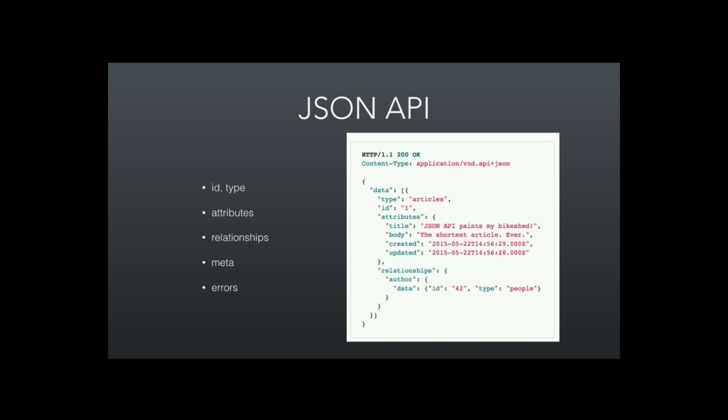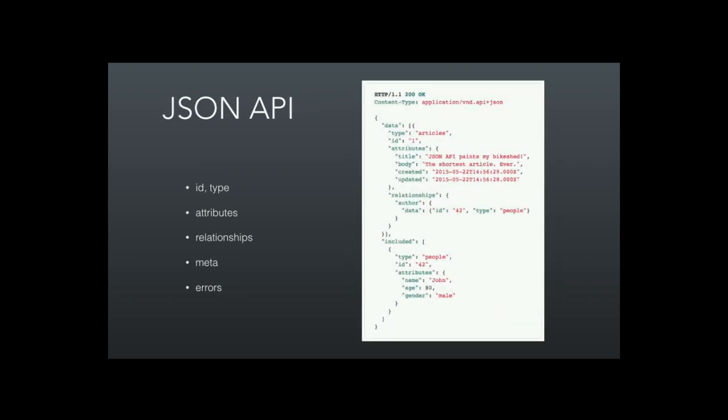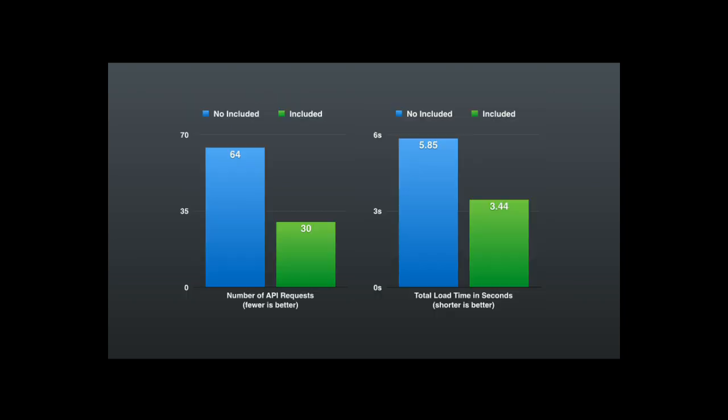We looked into how JSON API does minimize requests, and it does it through an extra option you can pass with your responses called 'included.' This included array lets you pass relationship data along with a response. So in this case, you've got an article as your main response data, and there's a relationship defined to an author. By default it doesn't pull this in, but you can set up your APIs to include that author data with your response. By doing this, we were able to reduce our number of requests on that same page by half and speed up our requests. We actually got this down to below two seconds — the only thing we had to do was set up our API in Drupal to deliver that included data, which was easy because it's just entity references.